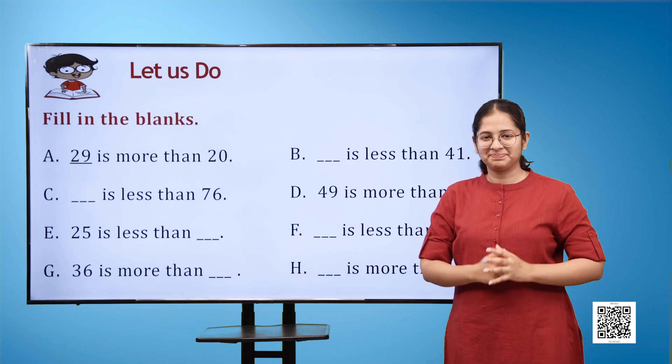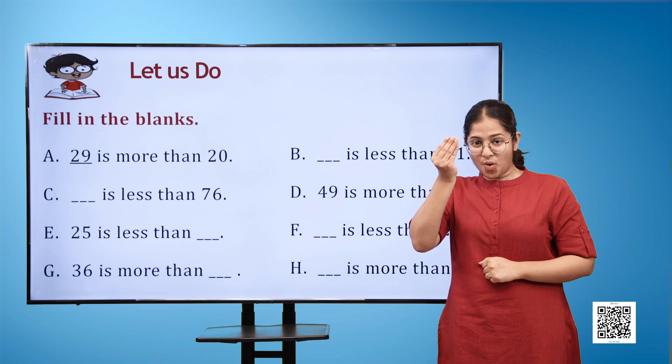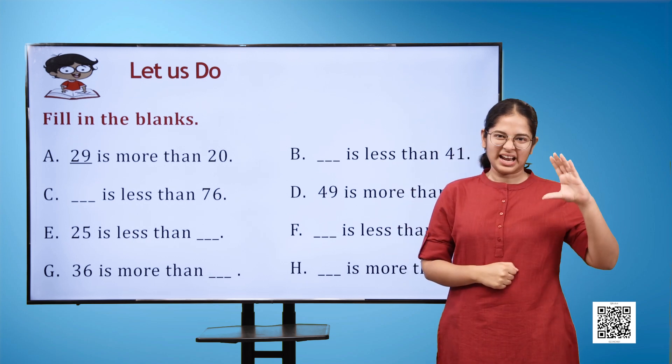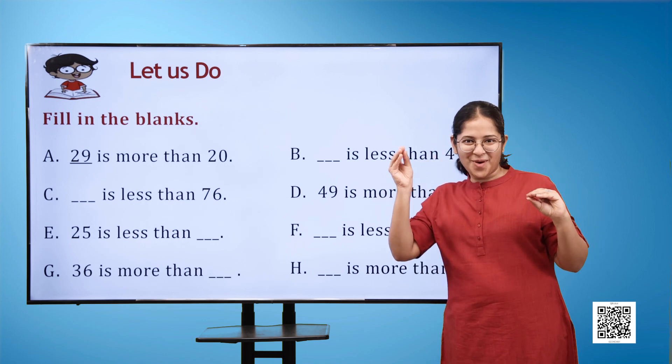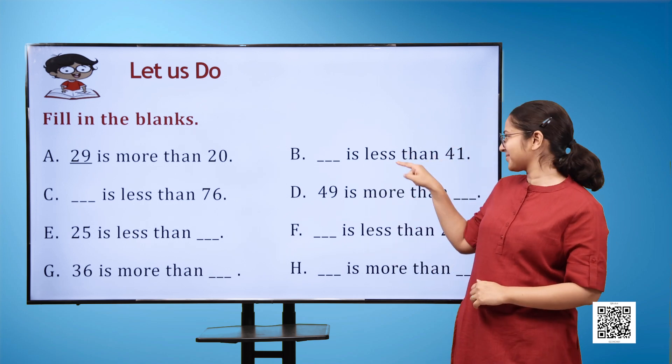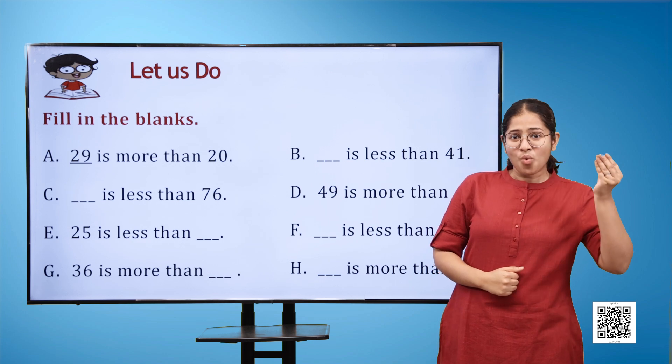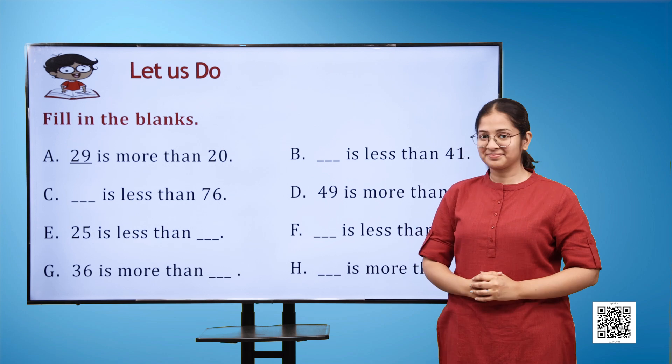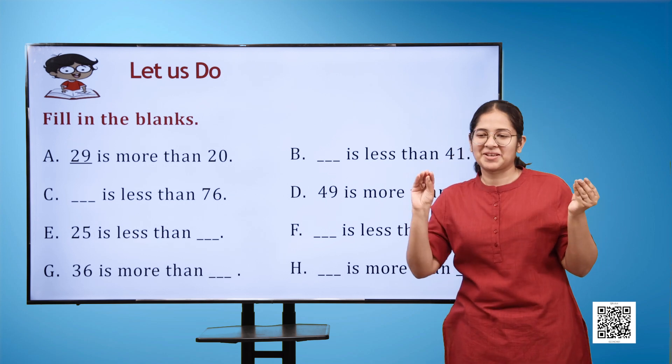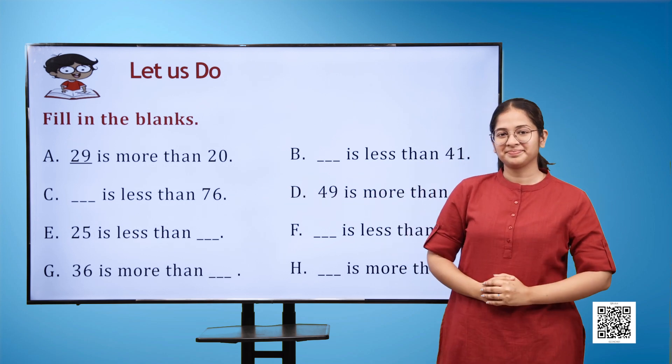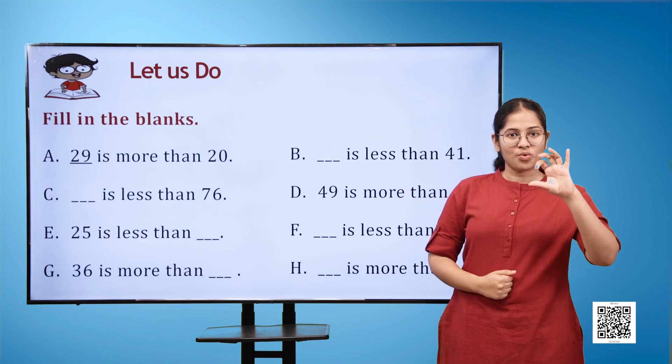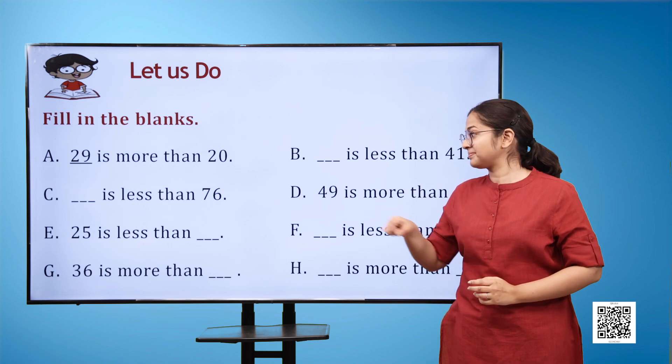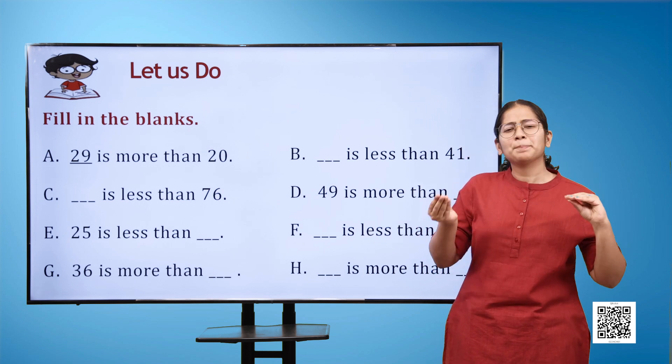Fill in the blanks. The first one has been solved for you. A) 29 is more than 20. B) blank is less than 41. C) blank is less than 76. D) 49 is more than blank. E) 25 is less than blank.